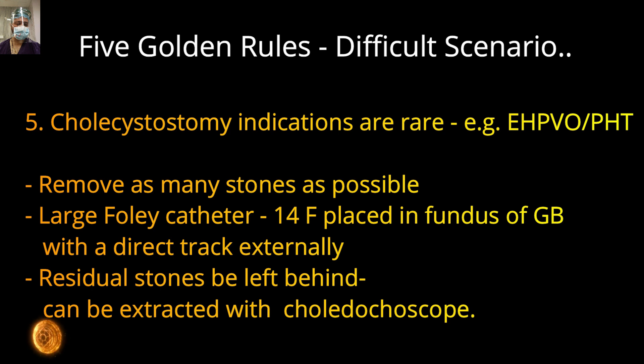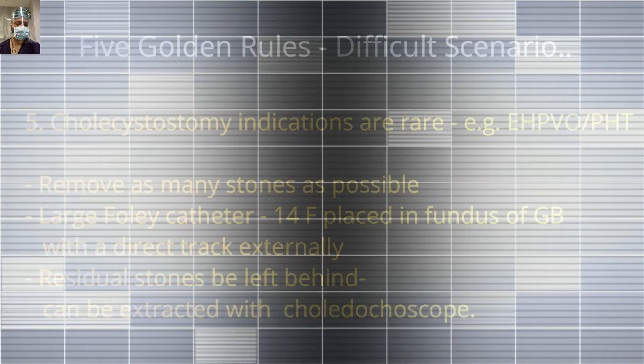Don't try to do laparoscopic cholecystectomy when large collaterals are present — it will lead to torrential bleeding and one may lose the patient. Open the gallbladder from the fundus, remove as many stones as possible, and remove part of the gallbladder wall for histopathological examination. Don't try to dissect it from the liver bed, as the collaterals are very difficult to control once opened. Insert a large Foley catheter — 14 French — placed in the fundus of the gallbladder, with a direct tract externally. Residual stones can be extracted with a choledochoscope.